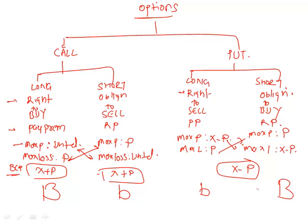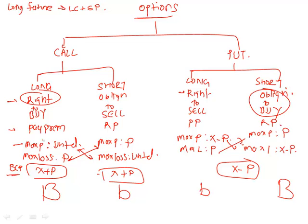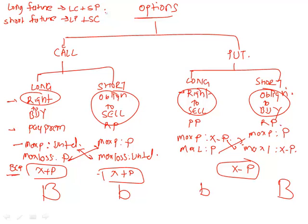Long call is bullish, short call is bearish, long put is bearish, and short put is bullish. Now comparing with a futures contract: a long future has a right and obligation to buy, which can be replicated by taking a long call and a short put with the same strike price. Similarly, a short futures contract — right and obligation to sell — is replicated by a long put and a short call.